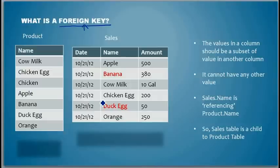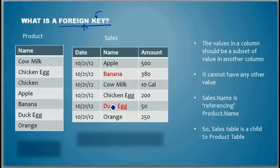Because when I learned databases years ago, they gave me the definition of a foreign key and then the example, and I was totally confused — it took me a couple of days to understand. Anyway, I have this table called 'product' and then I have this table called 'sales' — the table where we maintain the daily sales.